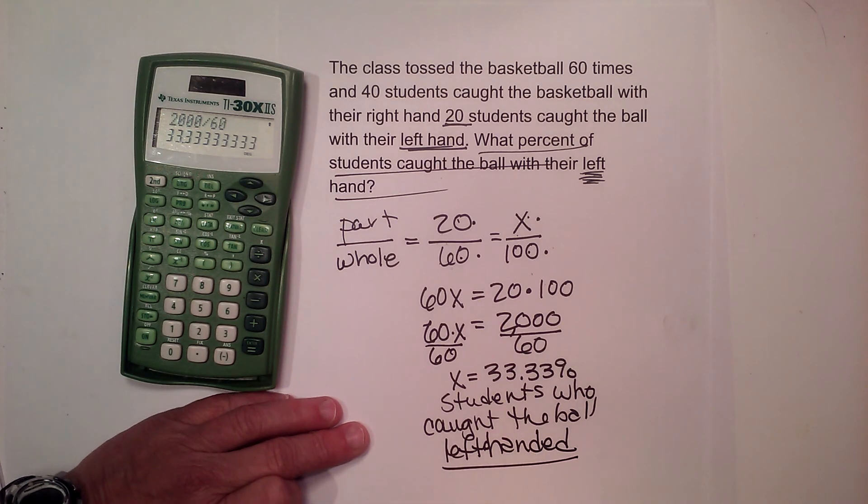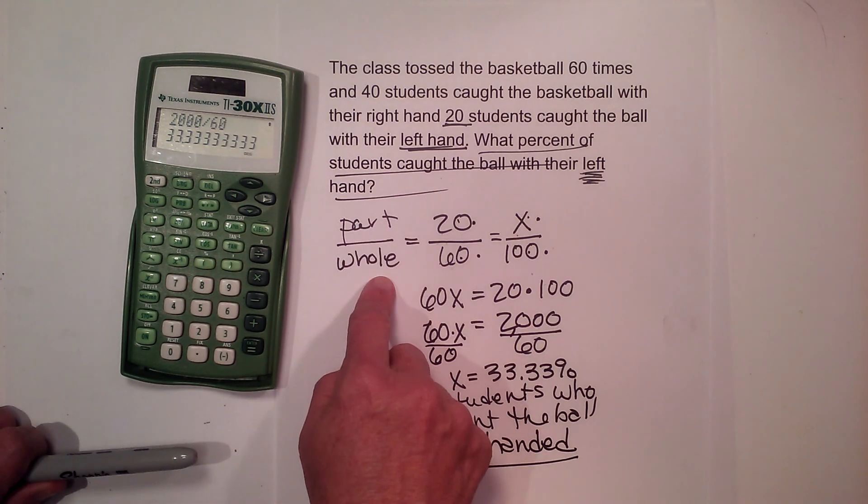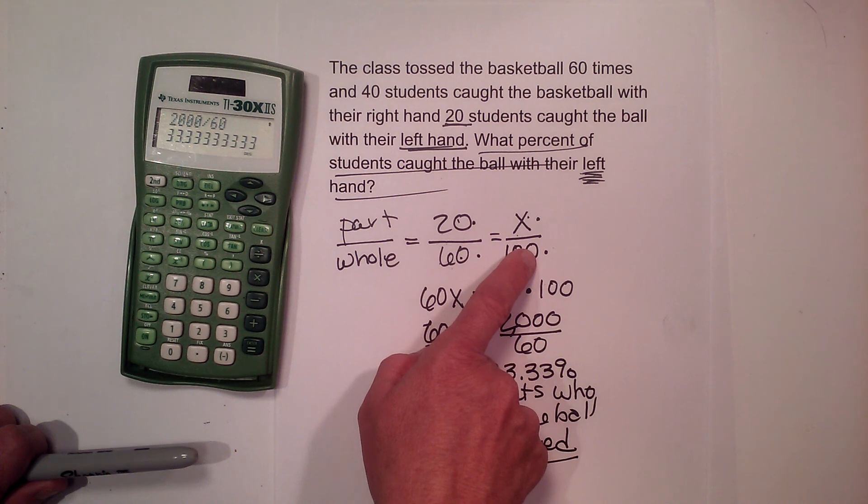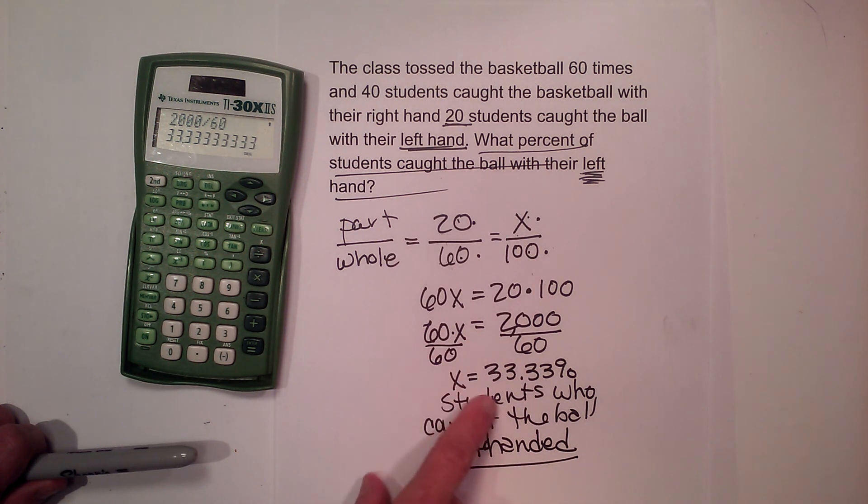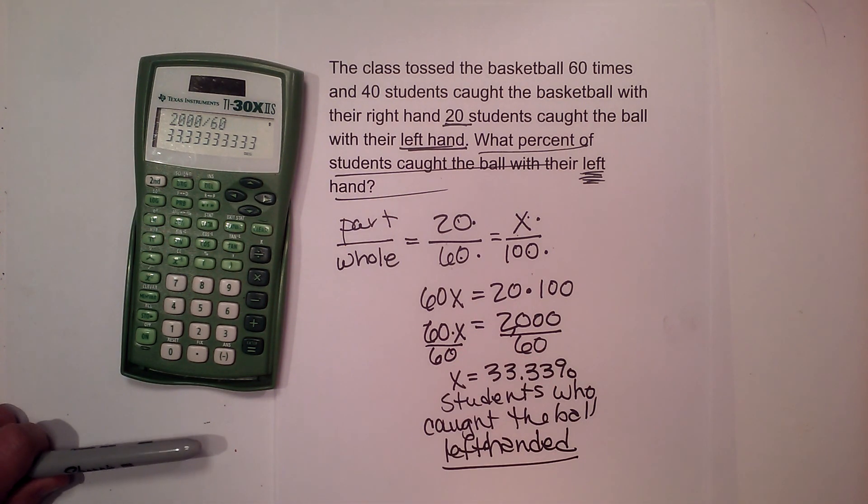There we go. And there were three good problems. Setting up part to whole is equal to x over 100 or percent over 100. Again, you set that up, you cross multiply, you divide by your coefficient, and boom, you have your answer. Hope this video was helpful.